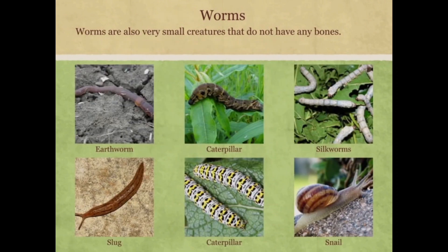Worms are also small creatures that do not have any bones. Examples include earthworm, slug, caterpillar, and silkworm.